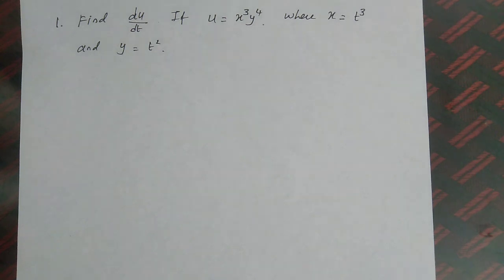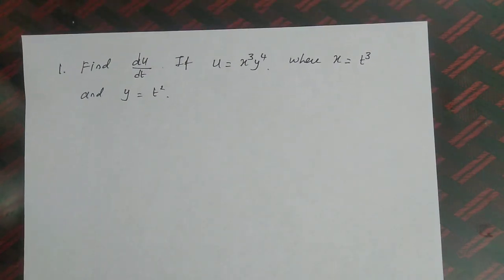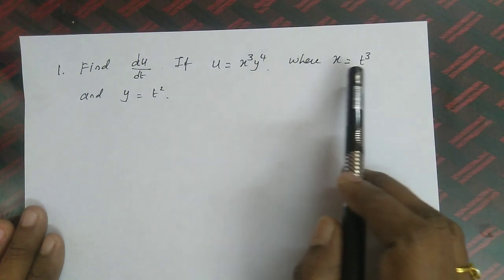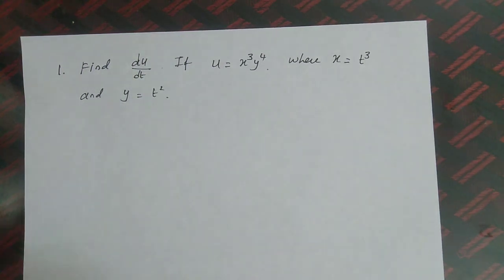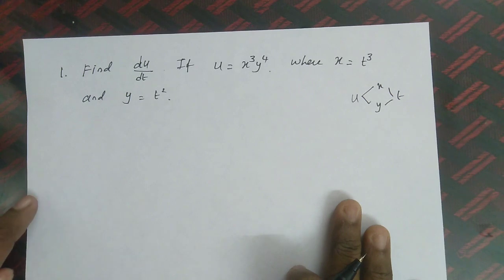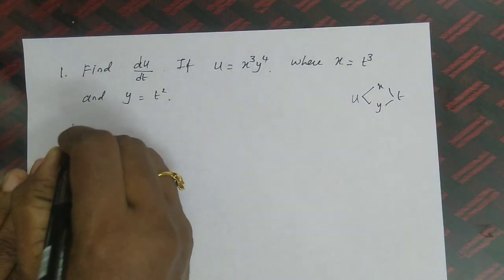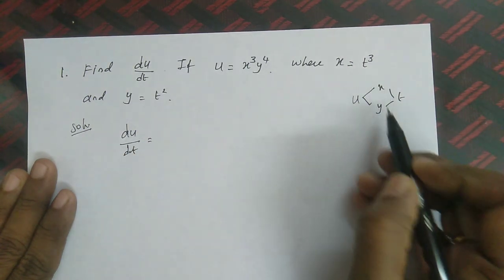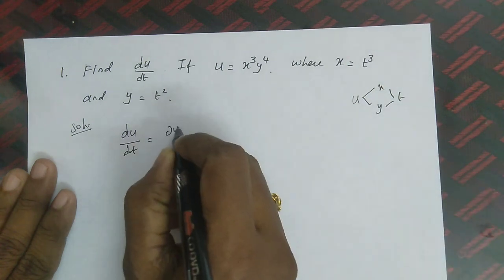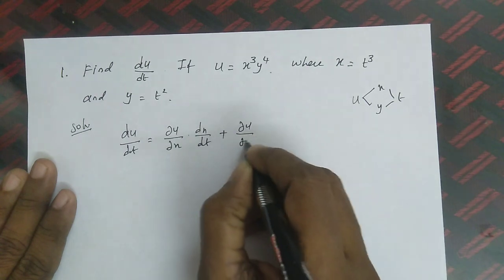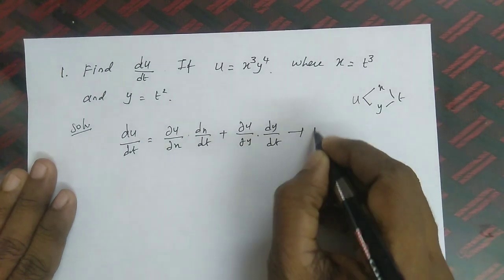Find du/dt if u = x³y⁴ where x = t³ and y = t². Here u is a function of x and y, and x and y are functions of t. So du/dt = (∂u/∂x)(dx/dt) + (∂u/∂y)(dy/dt).